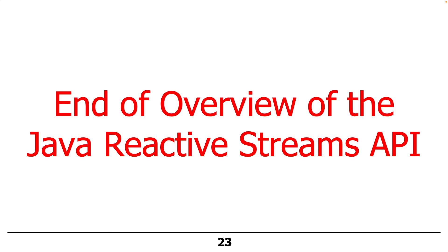That's the end of the overview of the Java Flow API. We don't have time to cover this further today, but next time we'll talk about what you really do with this API, because by itself it is extremely limited. Reactive streams frameworks like RxJava, Project Reactor, or Akka give you an enormous number of operators that you can use on flows connected between publishers and subscribers, and we'll talk about that starting next time.